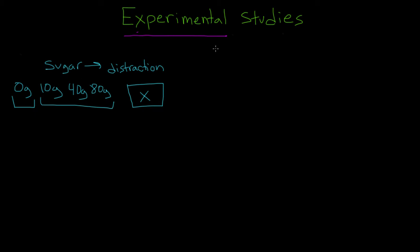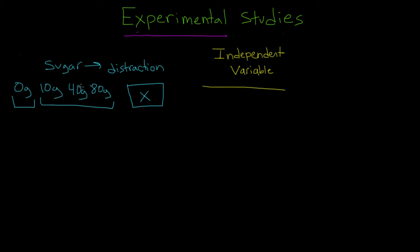In this case, we would say that our sugar level was our independent variable. When I say that something is an independent variable, what I'm actually saying is that this is the variable that we are manipulating in order to see what its effects are. So I'm manipulating the levels of sugar in order to see what effect this would have on distraction.